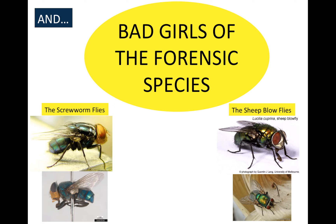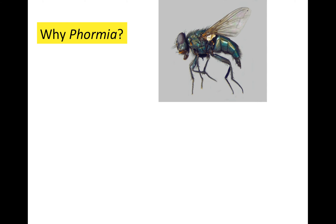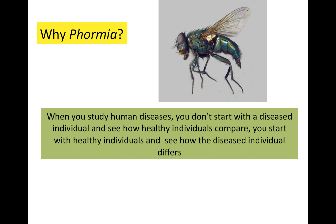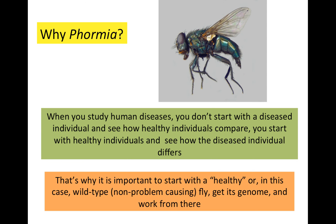The main question I'm interested in is how did this happen? How did these species decide whether or not they're going to eat live tissue or dead tissue? Physiologically there's a very big difference between the two, which means they had to have evolved this behavior, and I'm interested in studying what that evolutionary process was. Going back to Formia — when you study human diseases, you start with a healthy individual to figure out all the variation in the genome that doesn't contribute to disease, and then compare the diseased individual. That's why we're starting with a wild-type fly, getting its genome, and working from there.